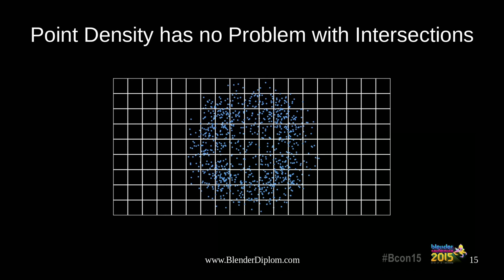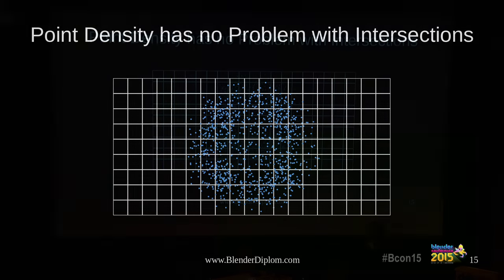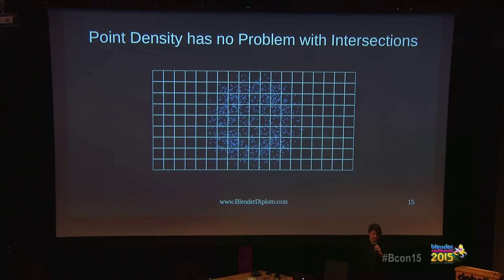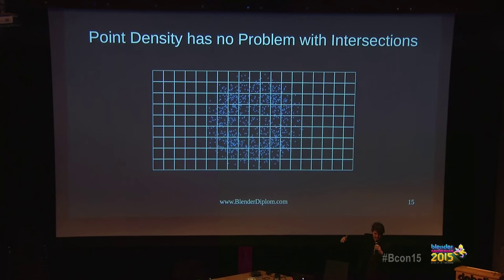What do point density textures do instead? They create a grid, and either a point is in one cell or another — no intersection checks at all. That's why rendering is a lot faster. Now, which of the three videos I showed at the beginning did not use point density textures but spheres? The last one — because in the last one all the spheres are separated from each other, so we don't need point density textures. And by using small spheres as particles we get a few more features like motion blur. So for the last video, I did not use point density textures.